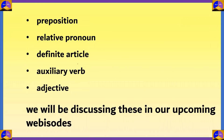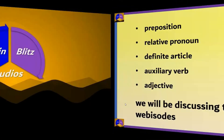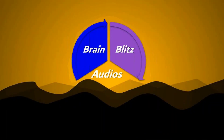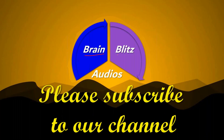So the words from the circle were used as: preposition, relative pronoun, definite article, auxiliary verb, and adjective. We'll be discussing these in our upcoming episodes. That's the end of this webisode. We hope you found it interesting. For more useful grammar lessons and other videos, please subscribe to our channel, Brain Blitz Audios. Until the next webisode, take care, stay safe, bye bye for now.